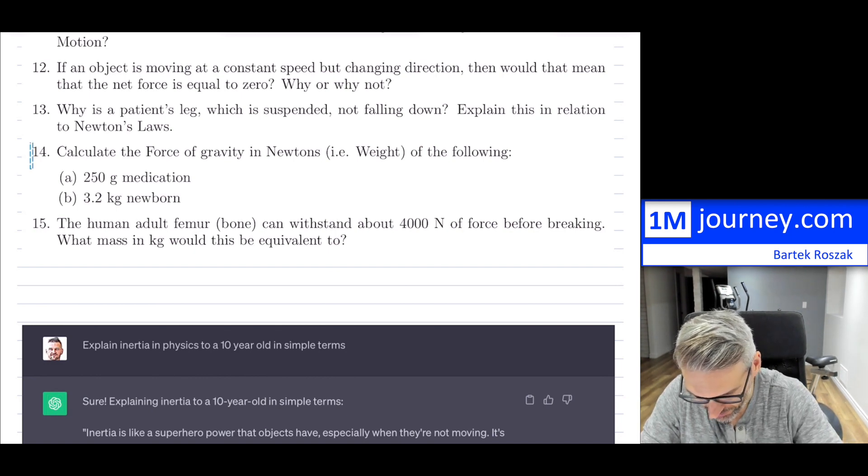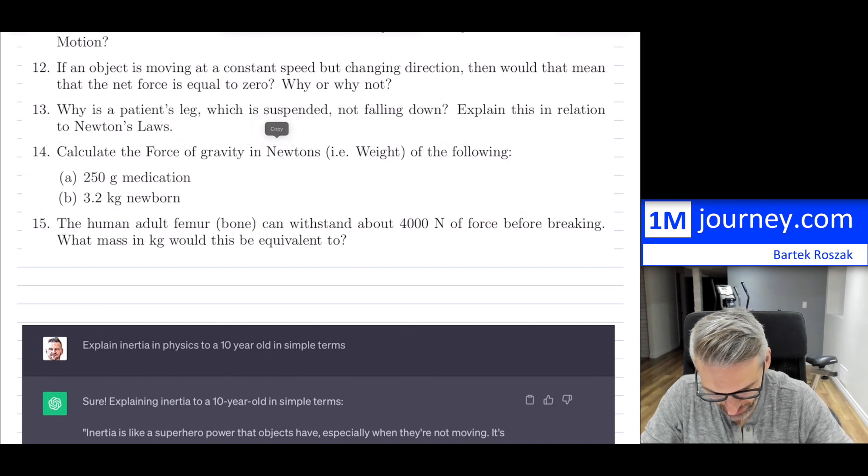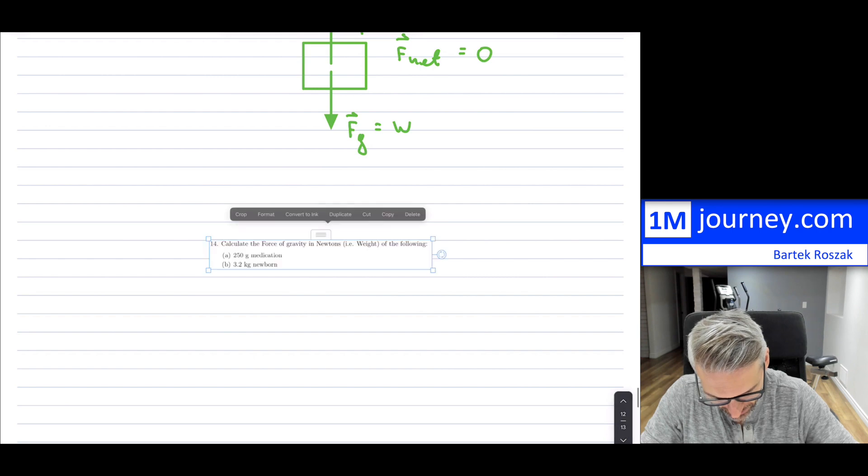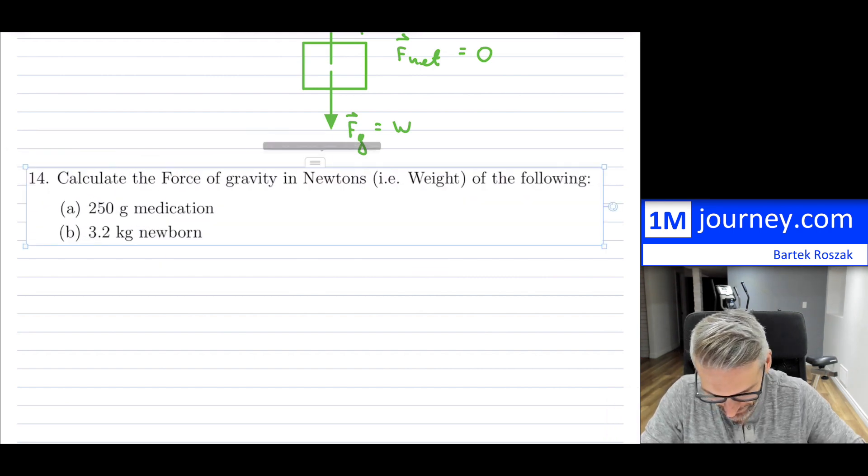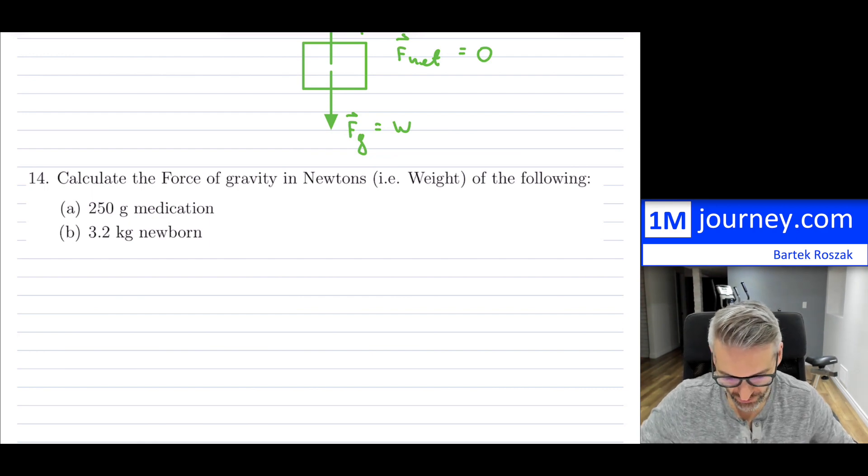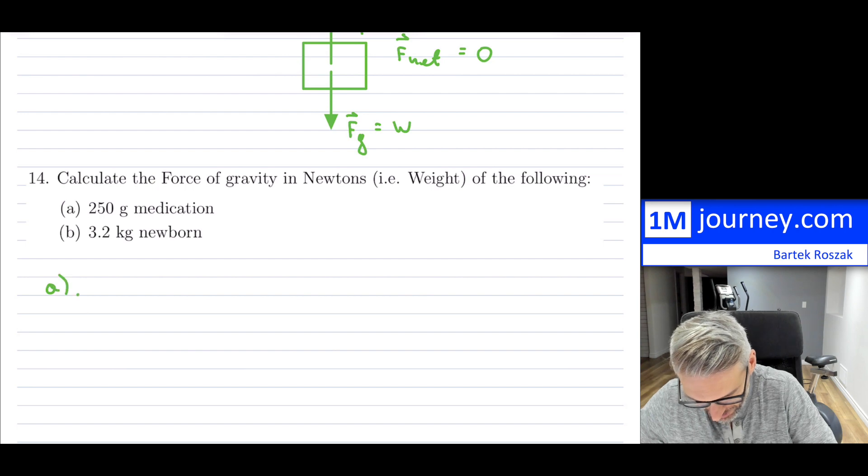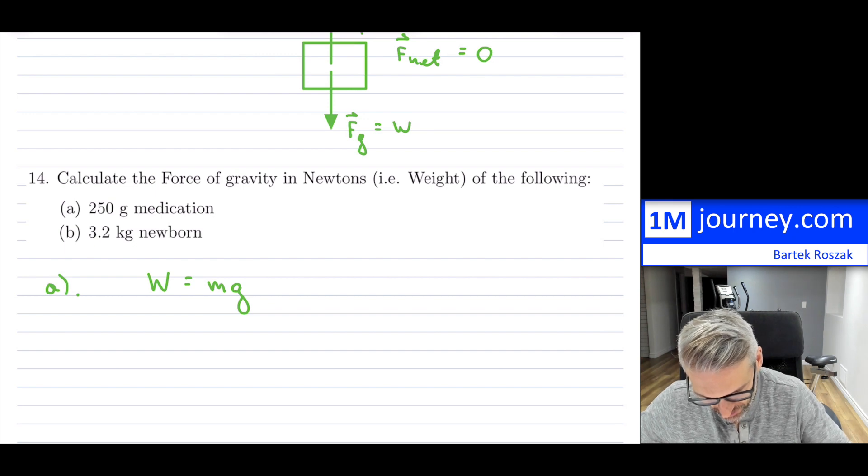The next one is a little bit easier for us. All we have to do is calculate the force of gravity. Let me paste it so this is what we have right there: calculate the force of gravity in Newtons of the following. We have medication here, so this is for part a. Well, the weight is just equal to mass times gravity.